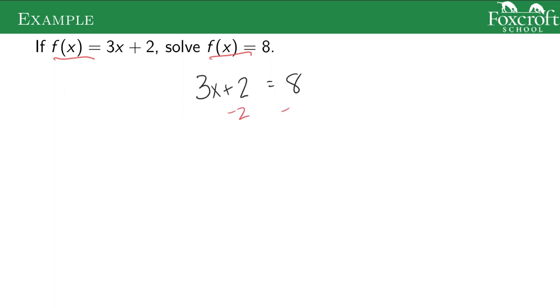So we subtract 2 from both sides, then divide both sides by 3, and we get x = 2. So when I plug 2 into my function, I get out 8. The solution to f(x) = 8 is 2.